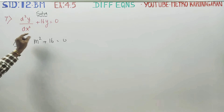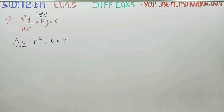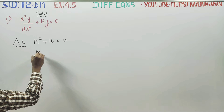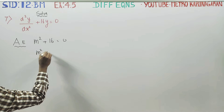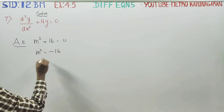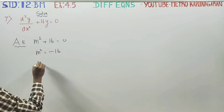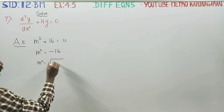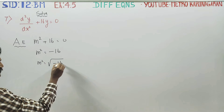Let's talk about notation. m² is equal to minus 16, so m is equal to the square root of minus 16.